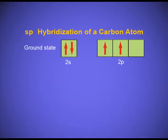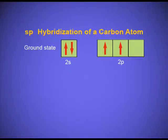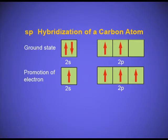In the ground state, there are only two unpaired electrons. These two unpaired electrons cannot make bonds with the two carbons and the hydrogens. So the electron from the 2s orbital will get excited to the vacant 2p orbital. One electron from the 2s orbital is promoted to the 2p orbital which was vacant in the ground state.